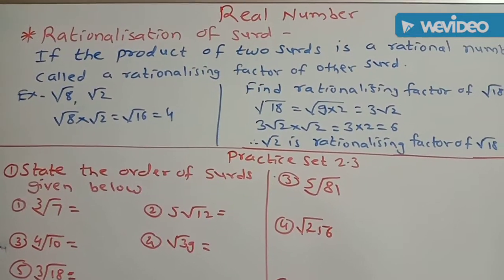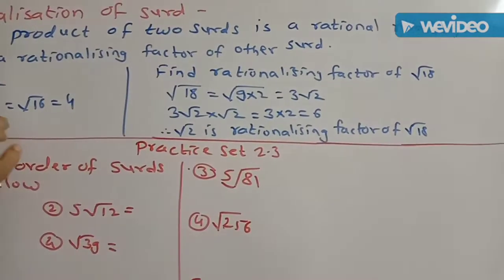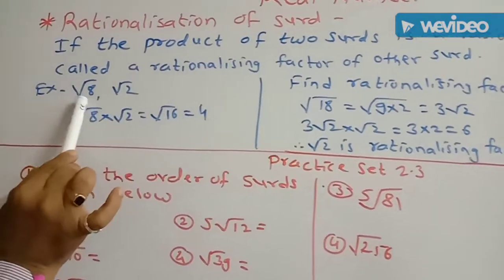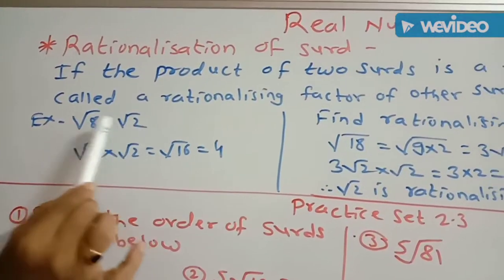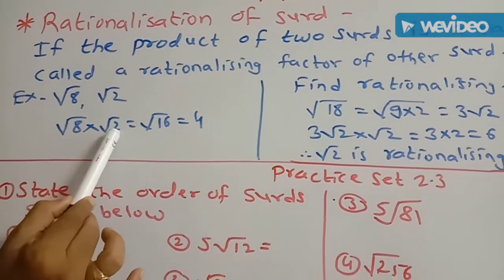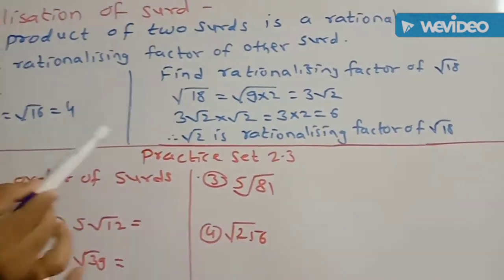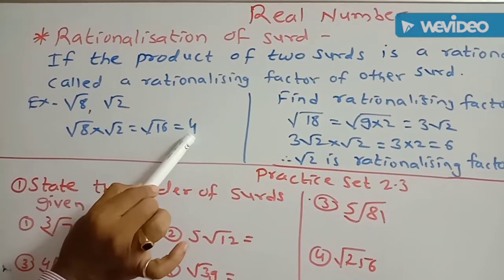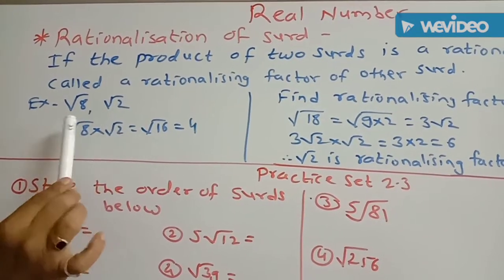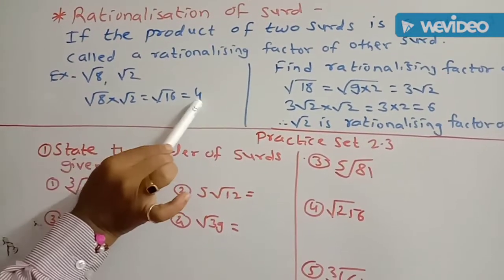Next topic is rationalization of SIRD. If two SIRDs are given and their product is a rational number, then each SIRD is called the rationalizing factor of the other SIRD. For example, root of 2 and root of 8 are given. Their product: root of 8 into root of 2 equals root of 16, and square root of 16 is 4, which is a rational number. Therefore root of 2 and root of 8 are rationalizing factors of each other.